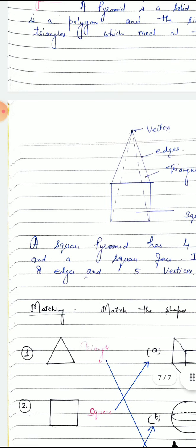It has eight edges. You can count—it has eight edges and five vertices, five corners: four on the base and one at the top.